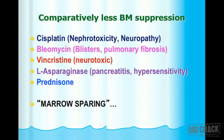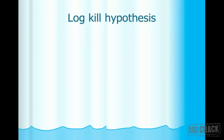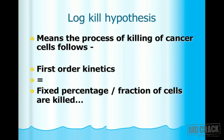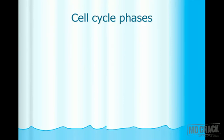The log kill hypothesis in anti-cancer therapy means that killing of cancer cells follows a logarithmic rule — first-order kinetics. This means a fixed percentage or fixed fraction of cells is killed, not a fixed number. It is a fixed proportion of the cells that are killed — that's the log kill hypothesis.